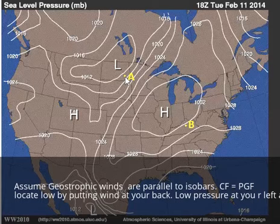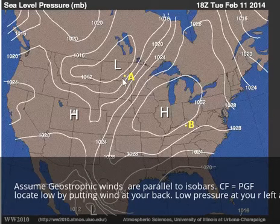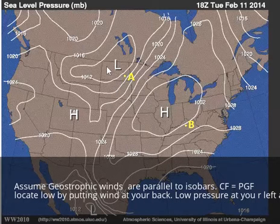Another way to think about it is that if you're standing with the wind at your back, lower pressures are going to be on your left. So if we stood with the wind at our backs at point A and were looking off toward the northeast, the only thing that makes sense is a southwesterly wind, because that gives us lower pressures on our left.